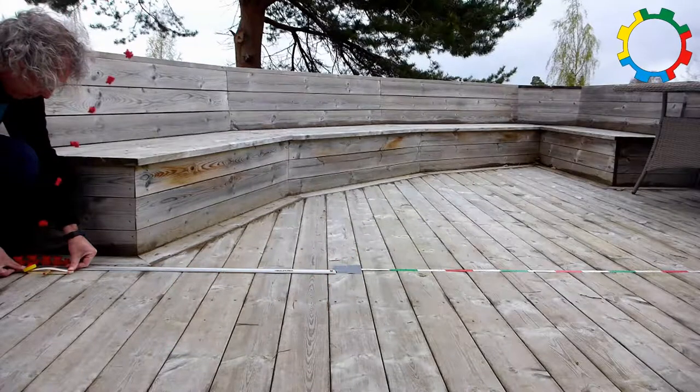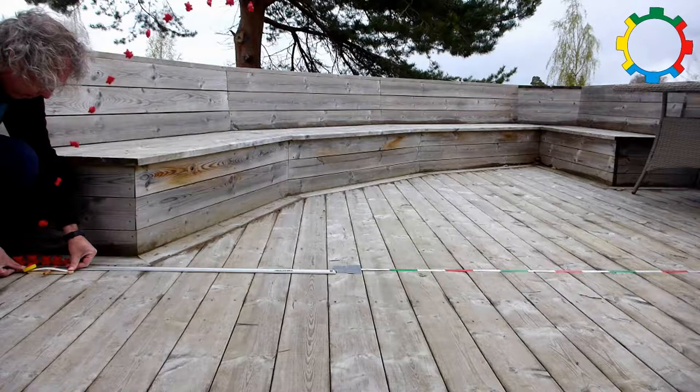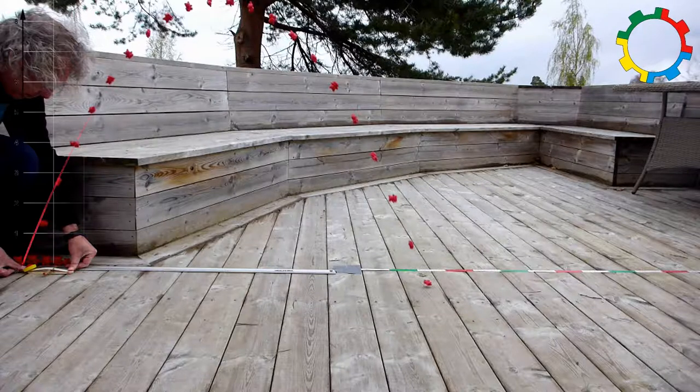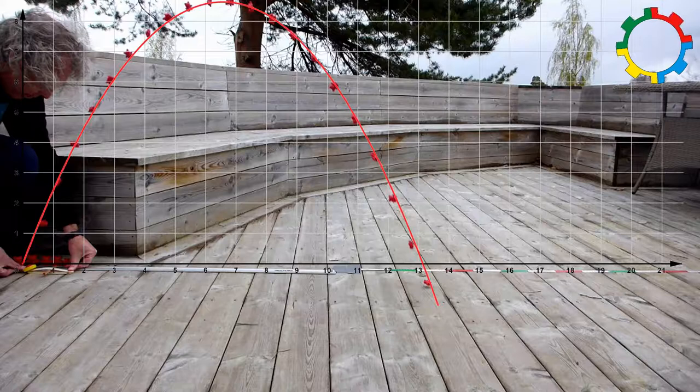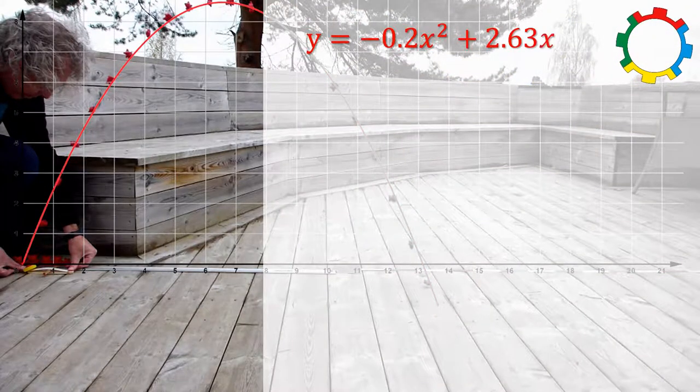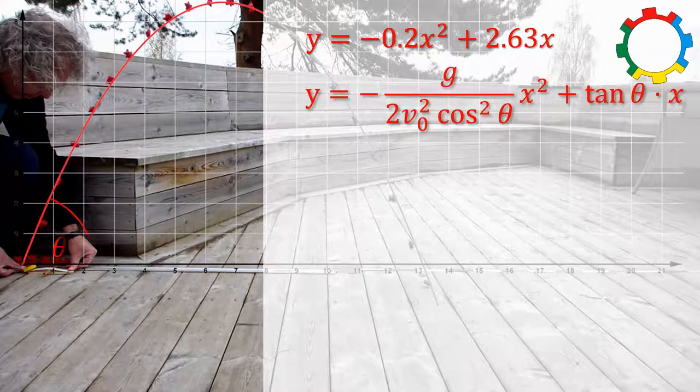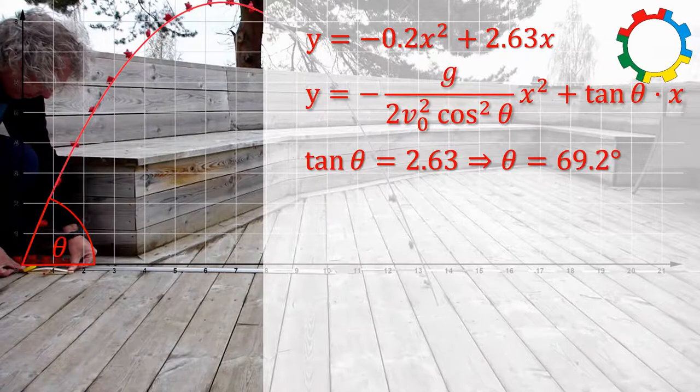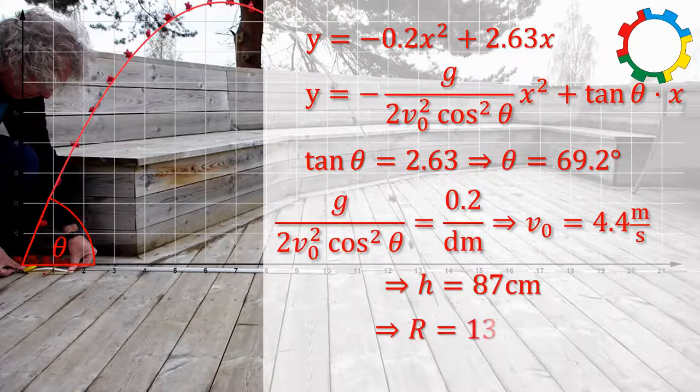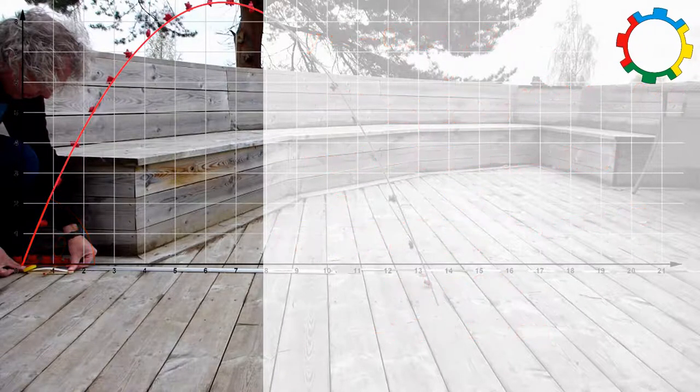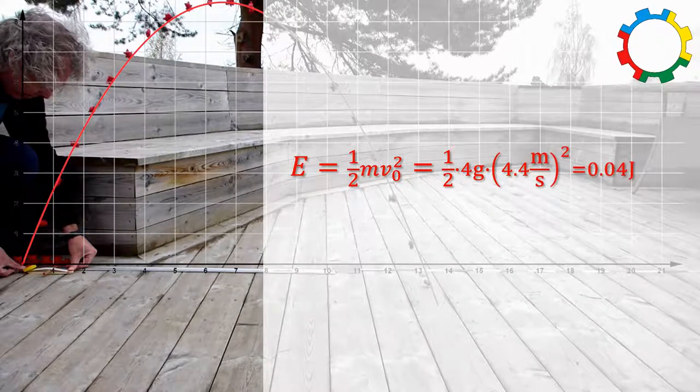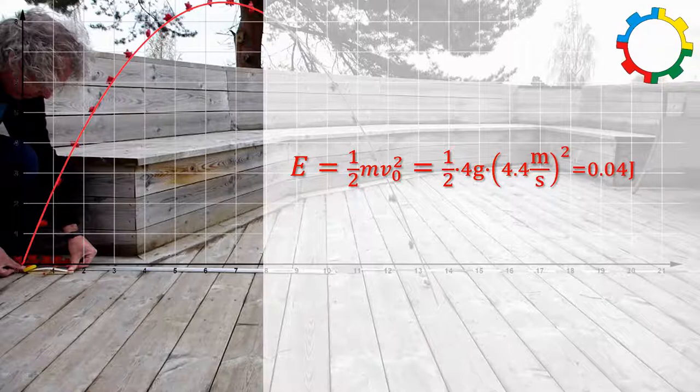In secondary school, we can use the same simple experiment to analyze the ballistic trajectory. Students can use, for example, GeoGebra to find the equation of the parabola. When they compare the modeled parabola with the theoretical equation, they can calculate the launch angle and the initial velocity, as well as the maximum height and the horizontal range. We can use the initial velocity to calculate the kinetic energy. It is 0.04 Joules.